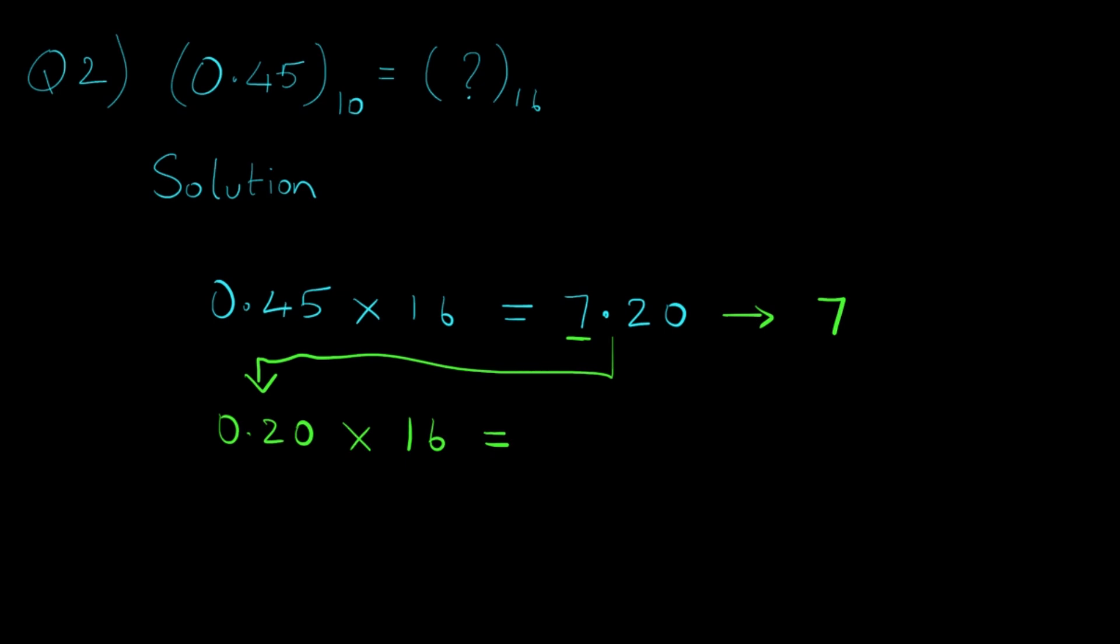So 0.20 times 16 is equal to 3.20. We write the integer part and ignore it for the next iteration, and for the next iteration we again have 0.20. Now if we multiply this with 16 we will again land up with the value 3.20, so we've got a repetitive answer.